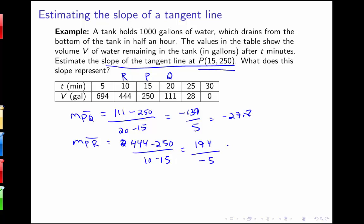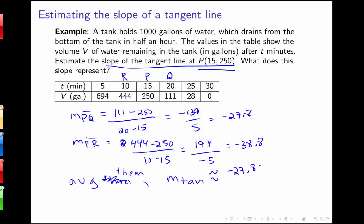Notice that neither of these slopes is probably our actual slope through p — one is probably a little high and one a little low. But we can use this information and estimate the slope at p by taking the average. So we estimate the slope of our tangent line as approximately negative 27.8 plus negative 38.8 divided by 2, giving us negative 33.3. We're not computing the exact limit here because we don't have all the information, but we can use the table to get an approximation.